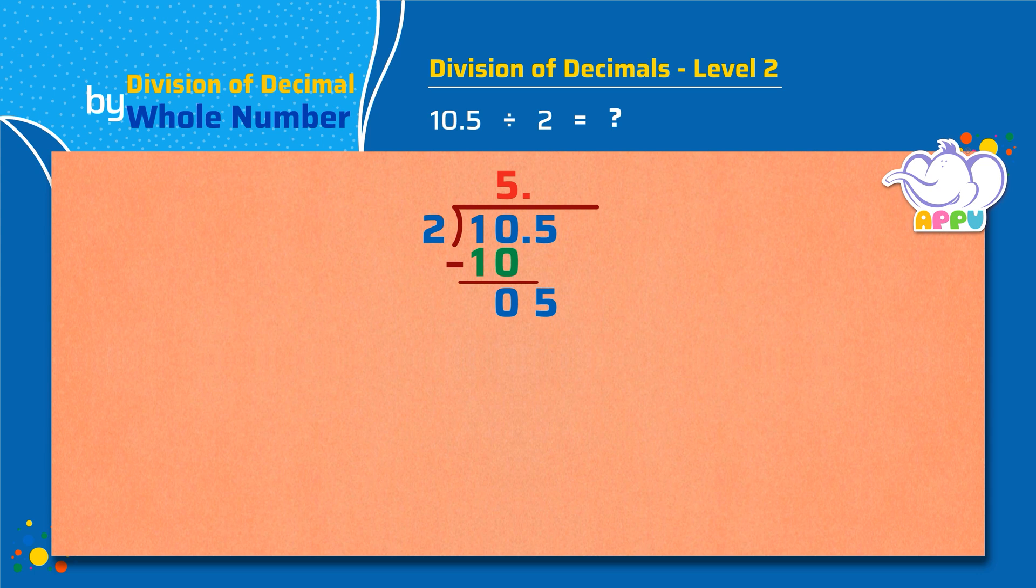2 divides 5 2 times, and 1 is the remainder. We cannot divide 1 by 2, so we write 0 and continue to divide. Now we get 10.